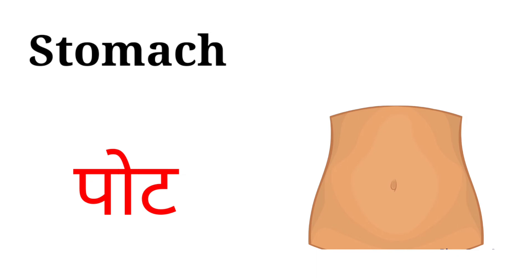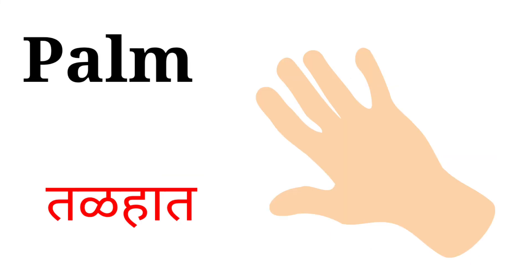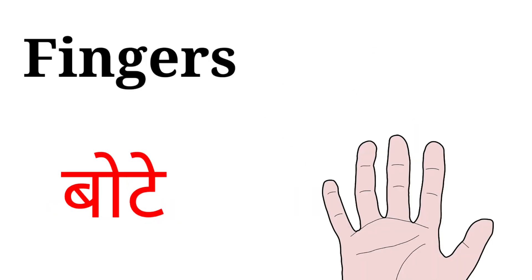Stomach, stomach means oot. Hand, hand means hat. Palm, palm means tadaat. Fingers, fingers means booty.